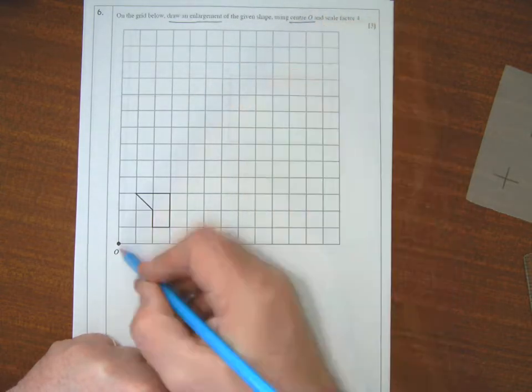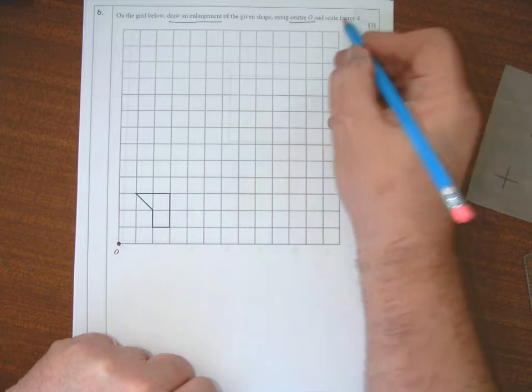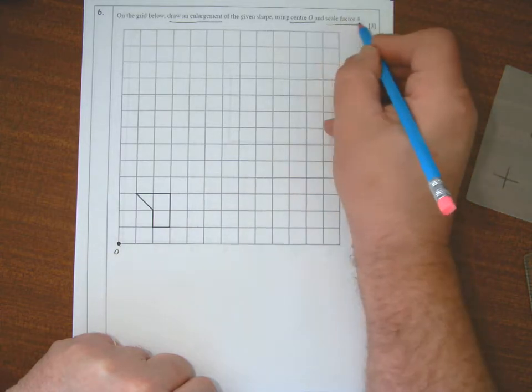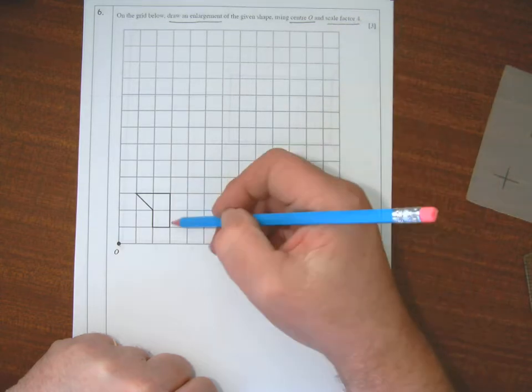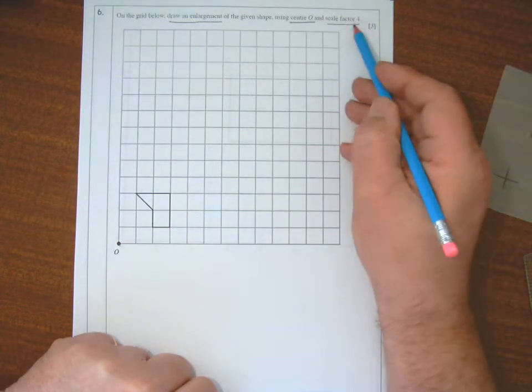We go center O, which is marked there for me, and the scale factor is 4. Now a scale factor of 4 means that all these lengths in this shape are going to be four times longer.